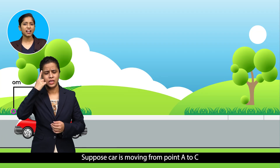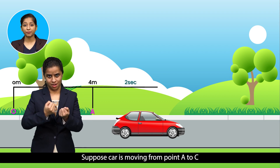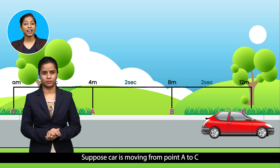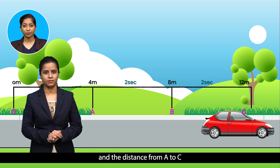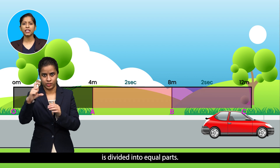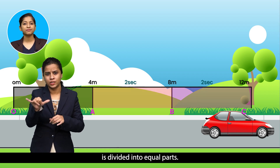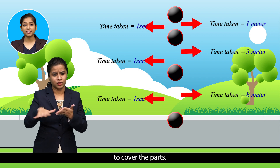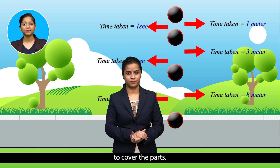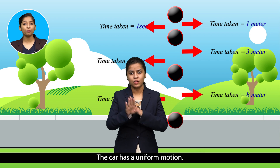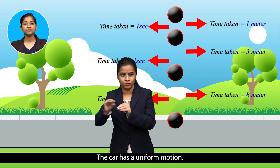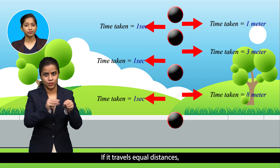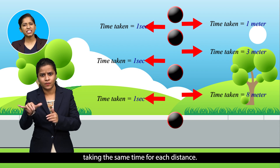Suppose a car is moving from point A to C, and the distance from A to C is divided into equal parts. The car takes the same time to cover each part — the car has uniform motion. A body has uniform motion if it travels equal distances taking the same time for each distance.